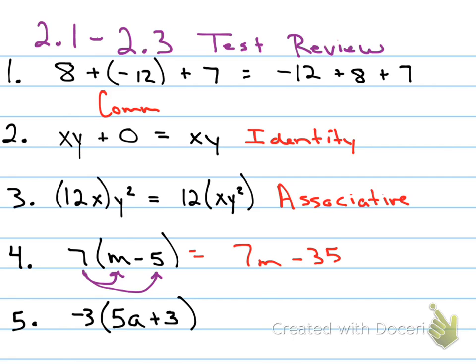So 7M minus 35. Okay? Now, if you said 7M plus negative 35, is that still right? It is. Okay? You just have to put parentheses around it. So you can say 7M plus negative 35. Technically, 35 is still negative. You just have to put parentheses to separate the double sign. Now, I prefer this way. All right? But either way would be correct.